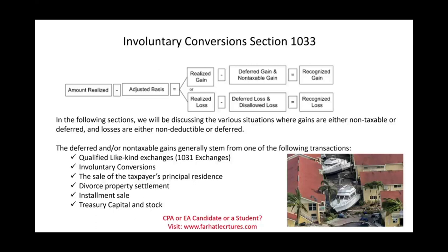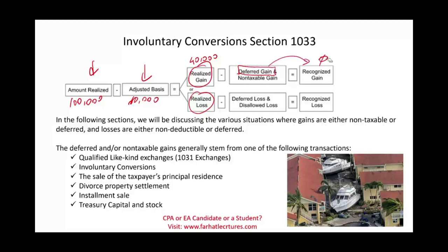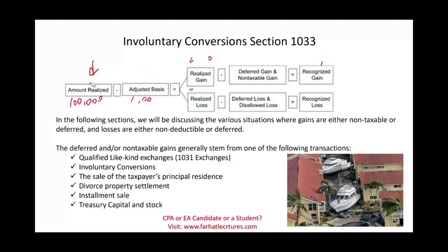If we remember the basic formula for computing the realized gain — which is amount realized minus the adjusted basis — it would give us either a realized gain or a realized loss. Let's assume we are dealing with a gain: we sold something for $100,000, the cost basis was $60,000, therefore we have a gain of $40,000. Now, maybe this gain might be deferred, meaning nothing will be recognized, or all of it is recognized and taxable. Involuntary conversions fall into this category.